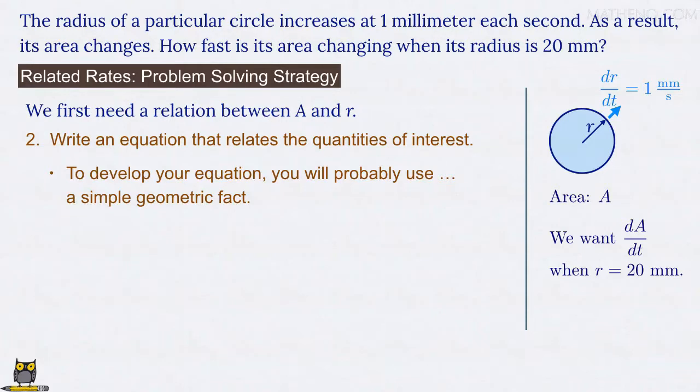Here, we just need the formula for the area of a circle in terms of its radius, A equals π r squared.